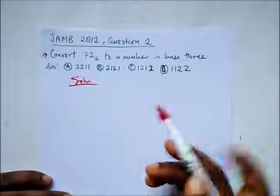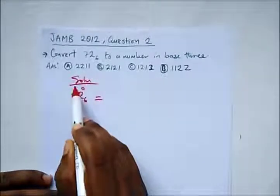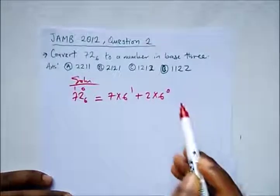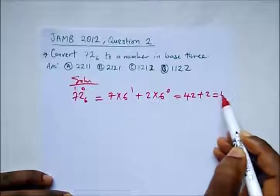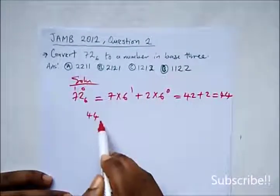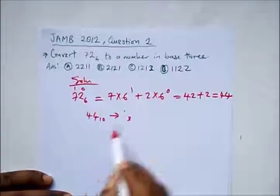How do we do this? 72 base 6 to base 10 gives us 7 times 6 raised to the power 1 plus 2 times 6 raised to the power 0. So this is 42 plus 2, which gives us 44. We'll convert 44 base 10 to base 3.